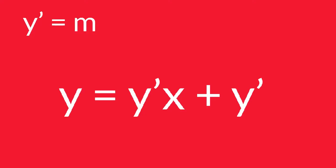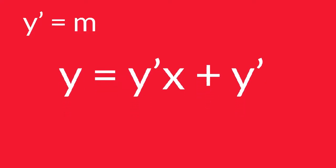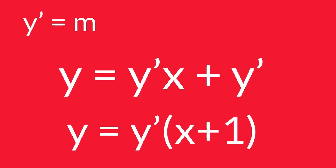Notice that there is a common factor. The final answer is y equals y prime times the quantity of x plus 1. This is the differential equation of the family of straight lines in which the slope and y-intercept are equal.